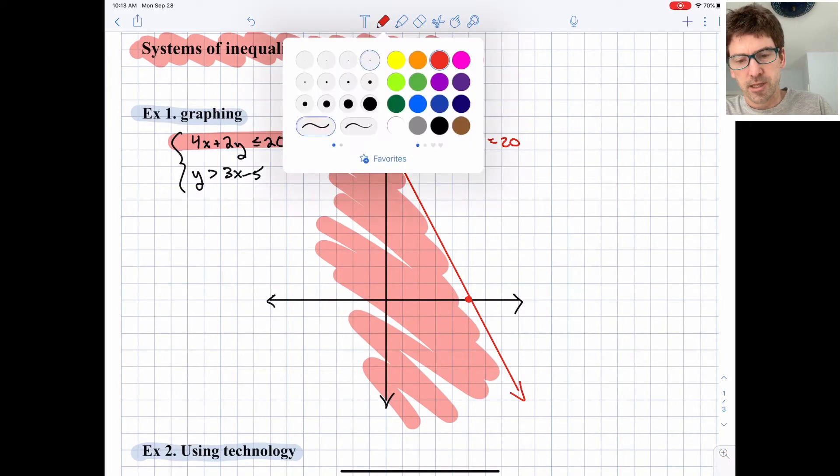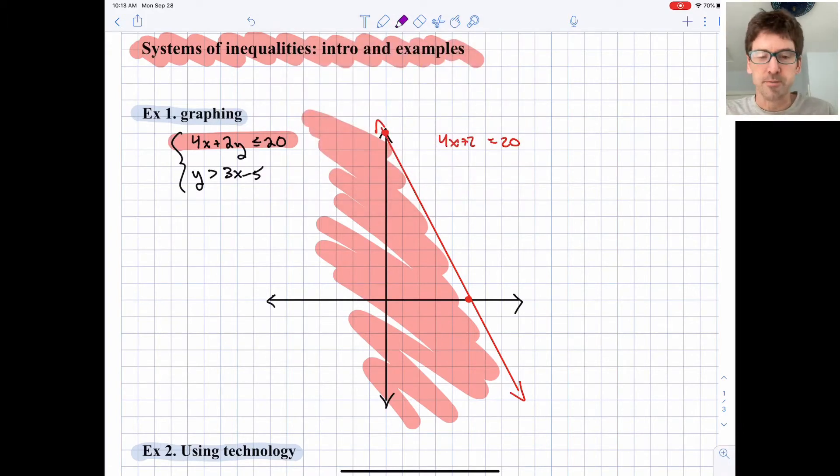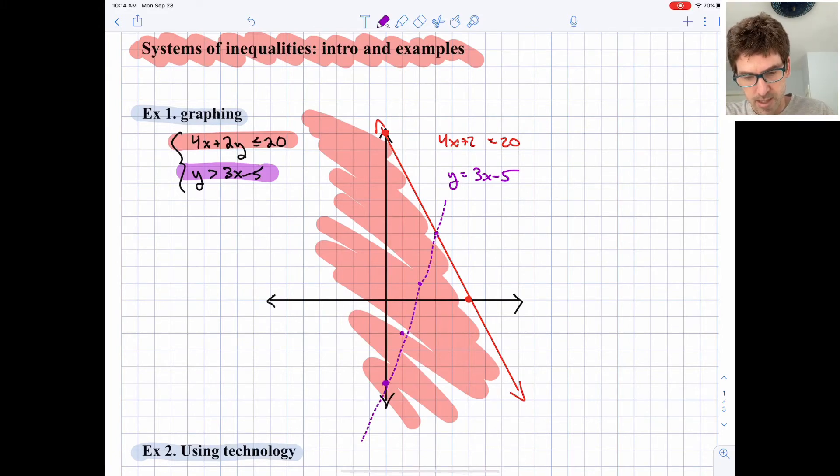Let's work with the next one now. I'll do that one in purple here. This boundary line is going to be y = 3x - 5, and it's going to be a dashed line. We have a y-intercept of -5 and then a slope of 3, so up 3 over 1, up 3 over 1, up 3 over 1, et cetera. We can go ahead and draw that line in.